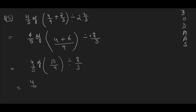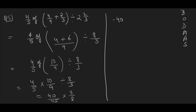Now solve 4/5 of 10/9 first: that gives 40/45. Then divide by 8/3, which becomes multiply by 3/8, giving 40 into 3 upon 45 into 8. After cancellation: 8 fives are 40 and 3 fives are 15, leaving 5/15, which simplifies to 1/3. So the answer is 1/3.